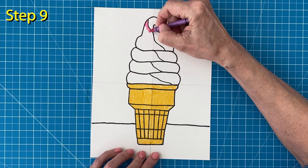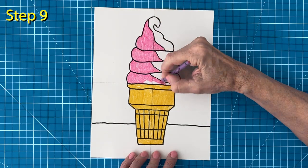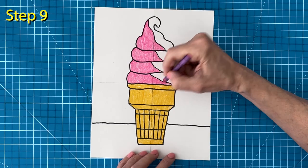I'm going to color the right side of my ice cream cone pink. But you could of course color yours any flavor that you want.